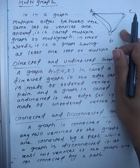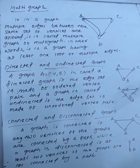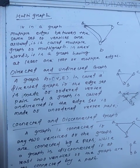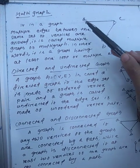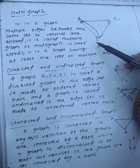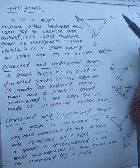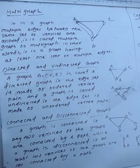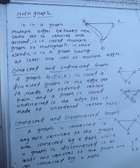So first of all, what is a multi-graph? If in a graph multiple edges between the same set of vertices are allowed, it is called a multiple graph. In other words, it is a graph having at least one loop or multiple edges.